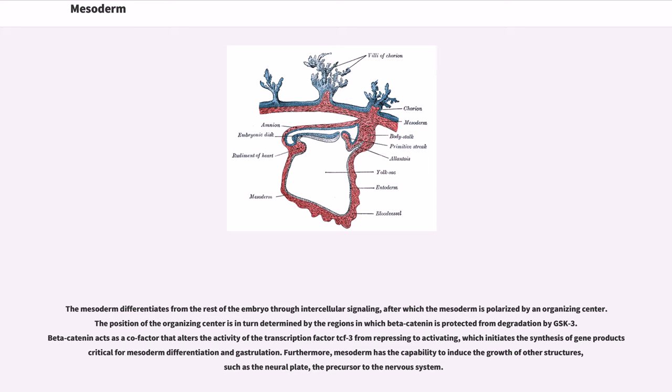Furthermore, mesoderm has the capability to induce the growth of other structures, such as the neural plate, the precursor to the nervous system.